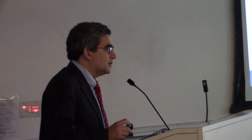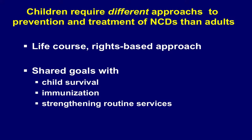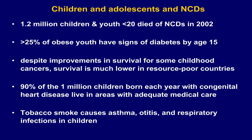Children require a somewhat different approach. You need a life course approach. These are not immediately preventable. There are shared goals with child survival, immunization, and strengthening routine health services. About 1.2 million children and youth die of an NCD. About 25% of overweight youth have signs of diabetes by age 15. Survival is much worse in resource-poor countries. 90% of children born with congenital heart disease do not get adequate care.